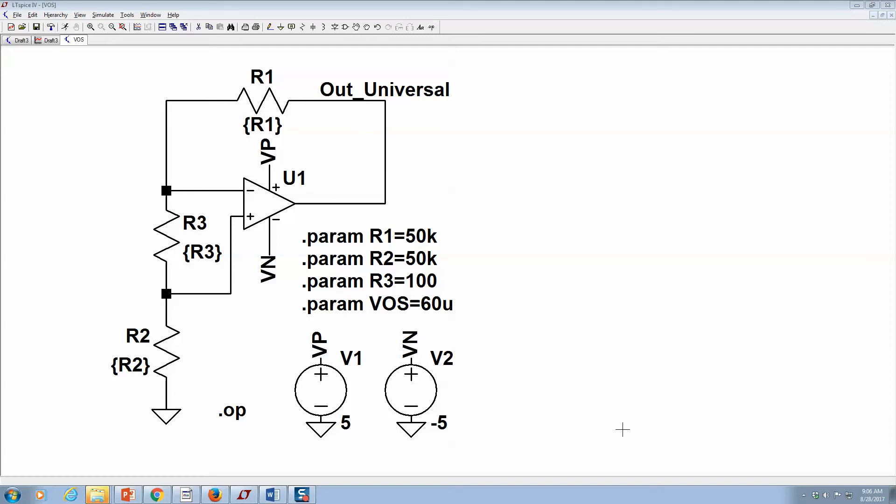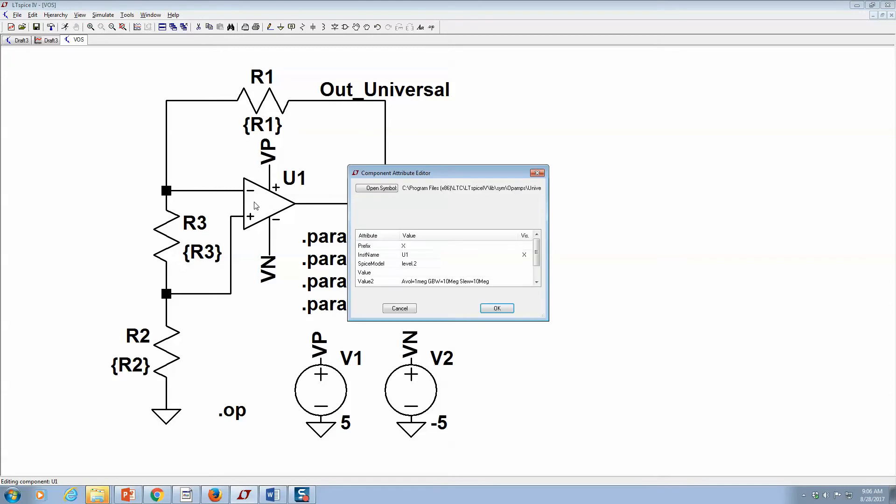Quick video on setting some parameters with the universal op amp model. I've already created a circuit to test the offset voltage for the universal op amp, and I assume you already know how to select that from the list.